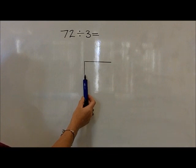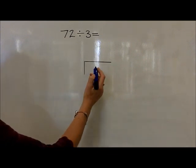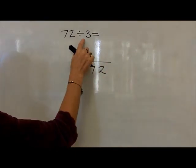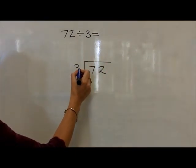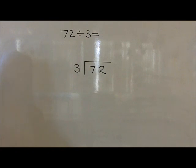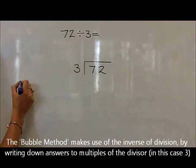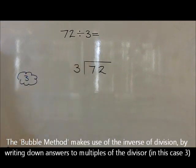We will use the division bridge to help get to the answer, where we write 72 underneath the division bridge and divide by 3 to the left of it. We now also use what we call the bubble method, where we're finding groups of 3, because we're dividing by 3.